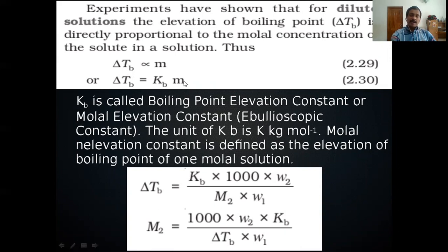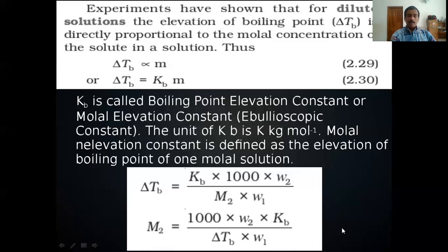From the equation ΔT_b = K_b × m, we can derive an equation to find the molecular mass of solute M₂. Substituting molality as (W₂/M₂) × (1000/W₁), we get: M₂ = (1000 × W₂ × K_b) / (ΔT_b × W₁). This is the equation to determine the molecular mass of an unknown solute from elevation of boiling point.